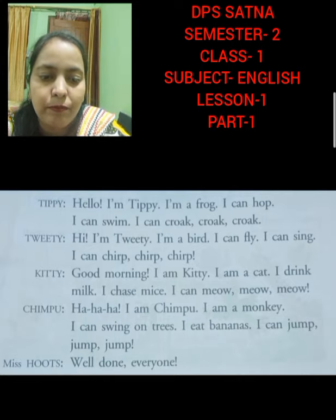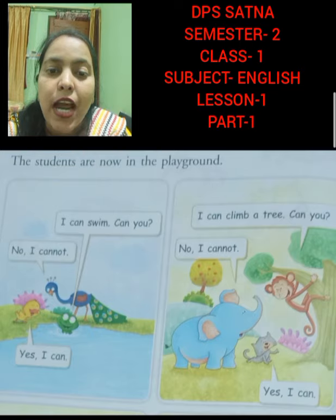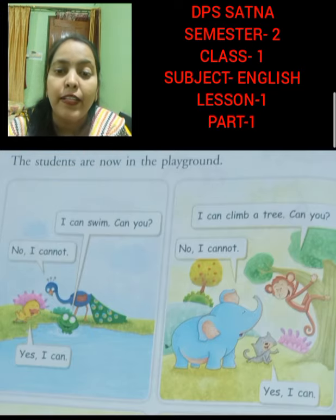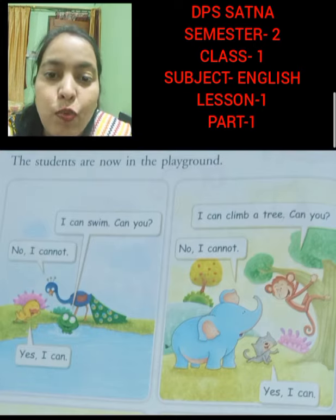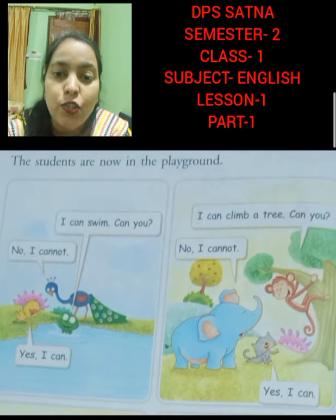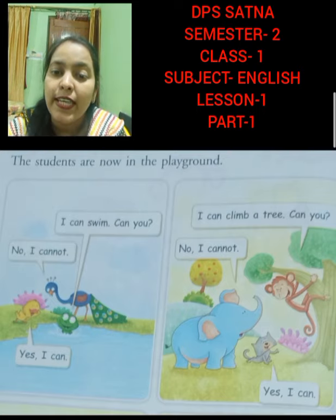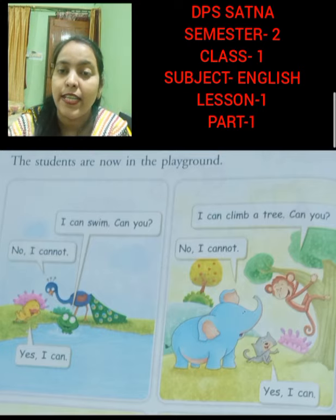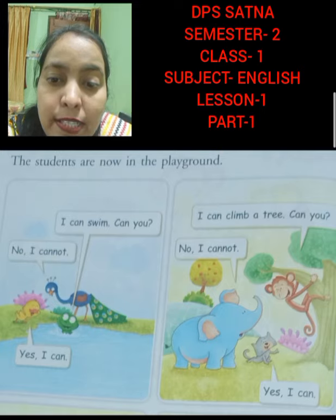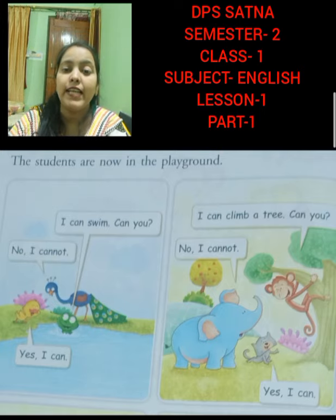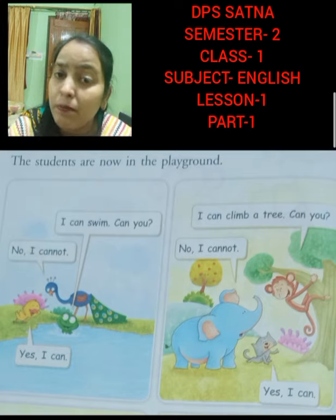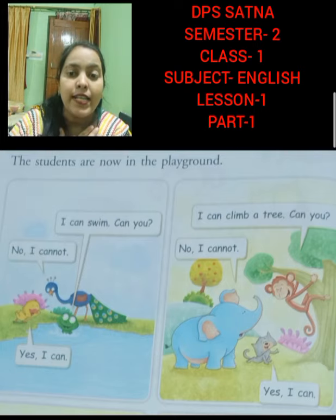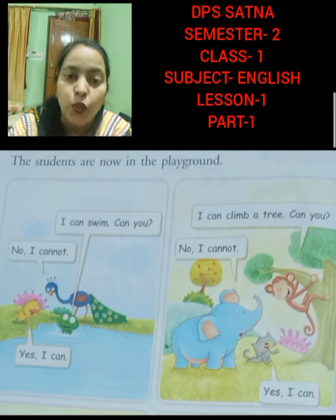Now the next page. The students are now in the playground. The frog is saying: I can swim. Can you? He is asking the duck. The duck replies: Yes, I can. Duck can swim. And the peacock says: No, I cannot. Peacock cannot swim.